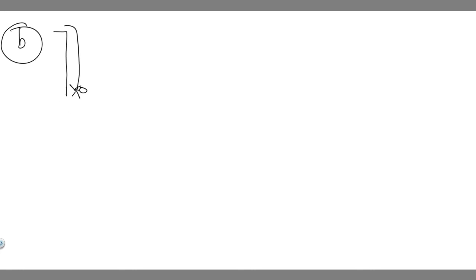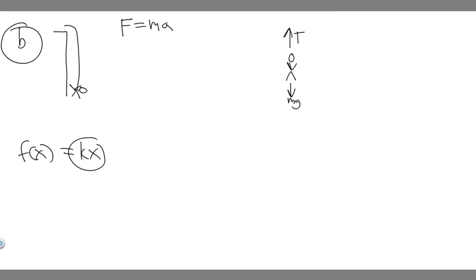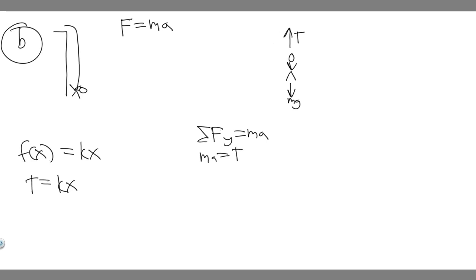Using Newton's second law — force equals mass times acceleration — we draw a free body diagram of the person at the bottom. There's mg acting downward and tension T acting upward due to the bungee cord. Hooke's law tells us the force equals kx, so T equals kx. Taking the sum of forces in the y-direction: ma equals T minus mg, and substituting kx for T gives ma equals kx minus mg.